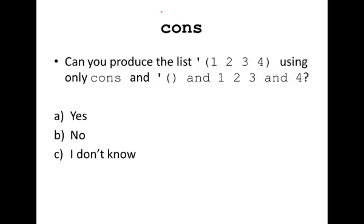Here's a question: Can you produce the list one, two, three, four using only cons and the empty list and one, two, three, and four? You should pause the video to think about this, but I can.